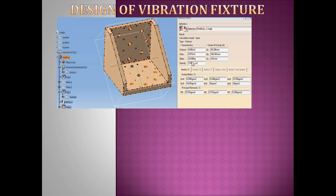For example, if the test range frequency is from 10 Hz to 2000 Hz, the highest frequency is 2000 Hz. So the vibration fixture must be designed such that its fundamental natural frequency is 1.5 times 2000 Hz, which equals 3000 Hz. However, in a practical scenario it is very difficult to design such a fixture, so we follow design guidelines to improve the natural frequency.